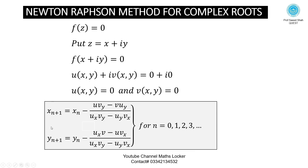Apply the Newton-Raphson formula for complex roots: x_{n+1} = x_n − (u·v_y − v·u_y) / (u_x·v_y − u_y·v_x), and y_{n+1} = y_n − (u_x·v − u·v_x) / (u_x·v_y − u_y·v_x), for n = 0, 1, 2, 3, ...